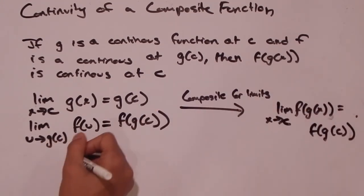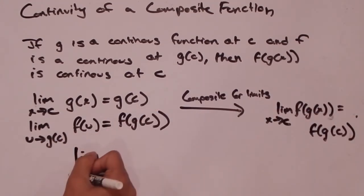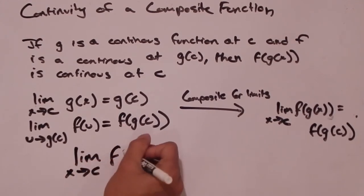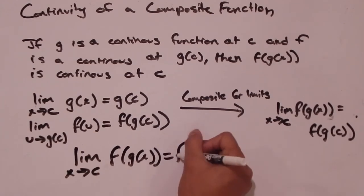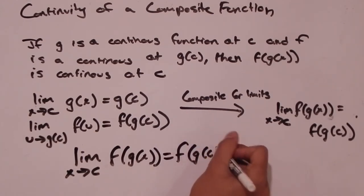Let me rewrite that down here. We've just proved using that composite property that the limit as x goes to c of f(g(x)) is equal to f(g(c)).